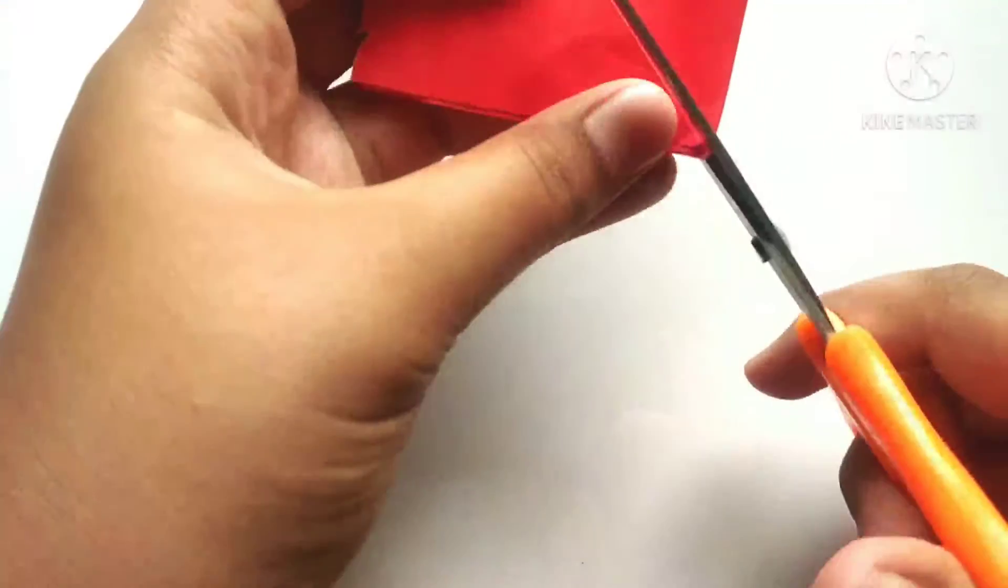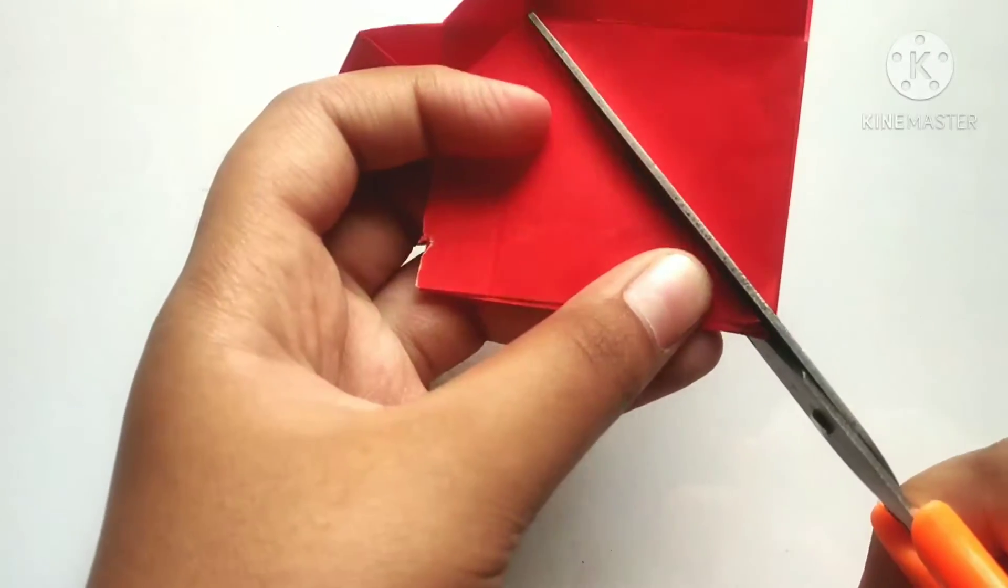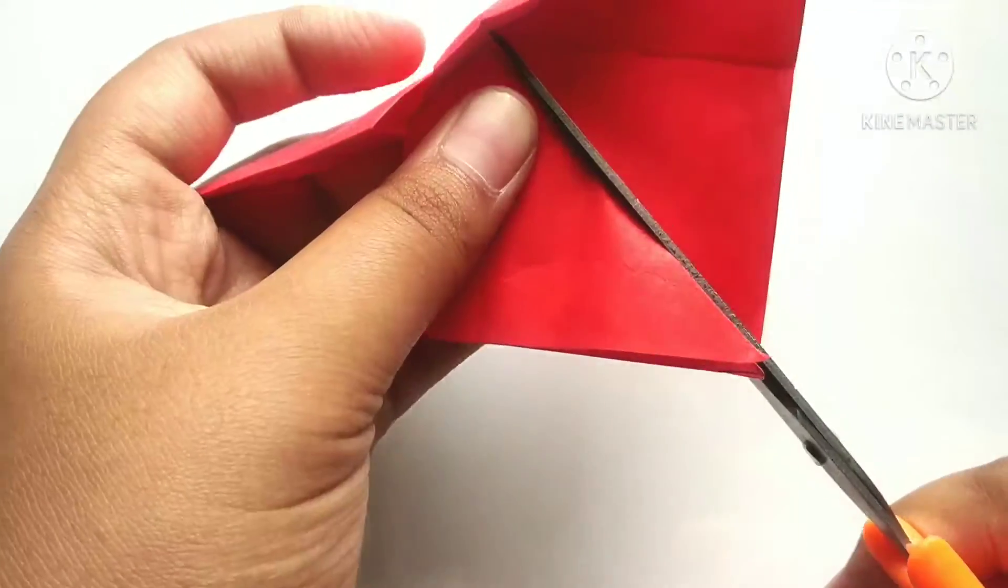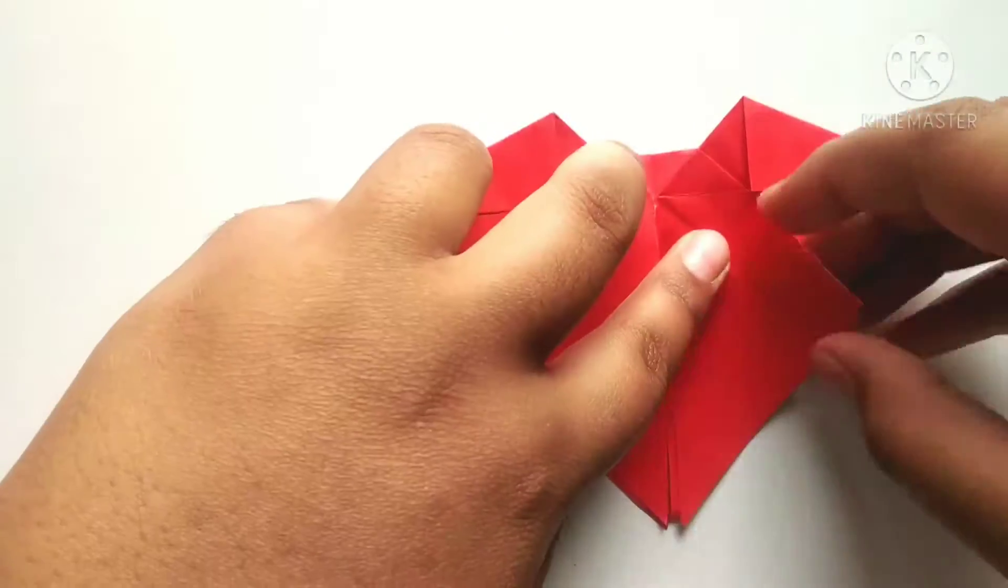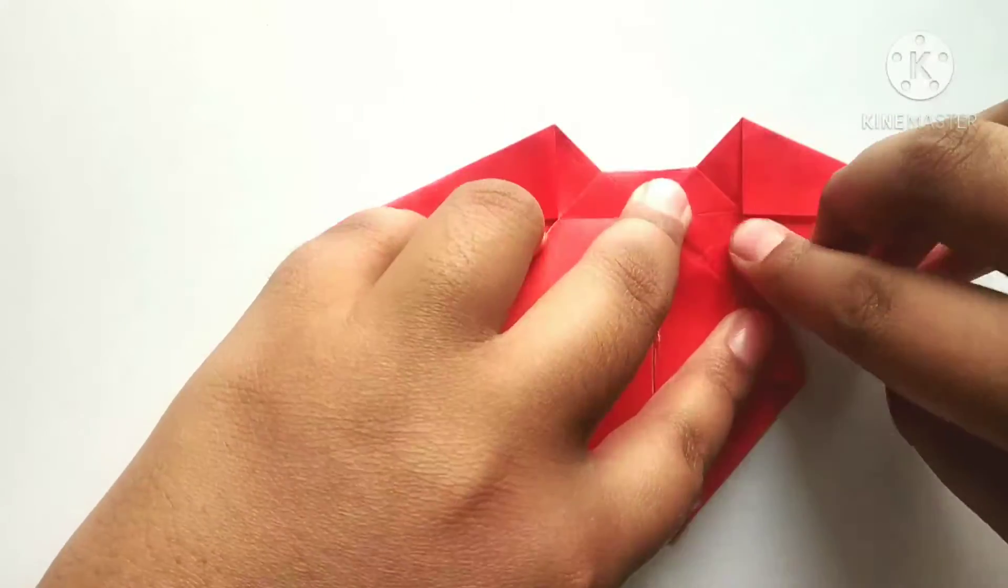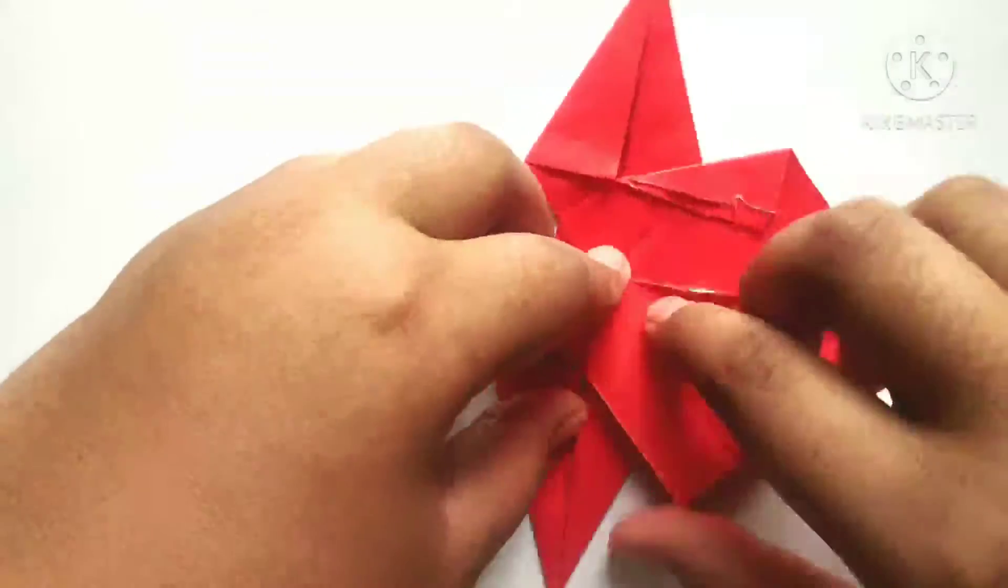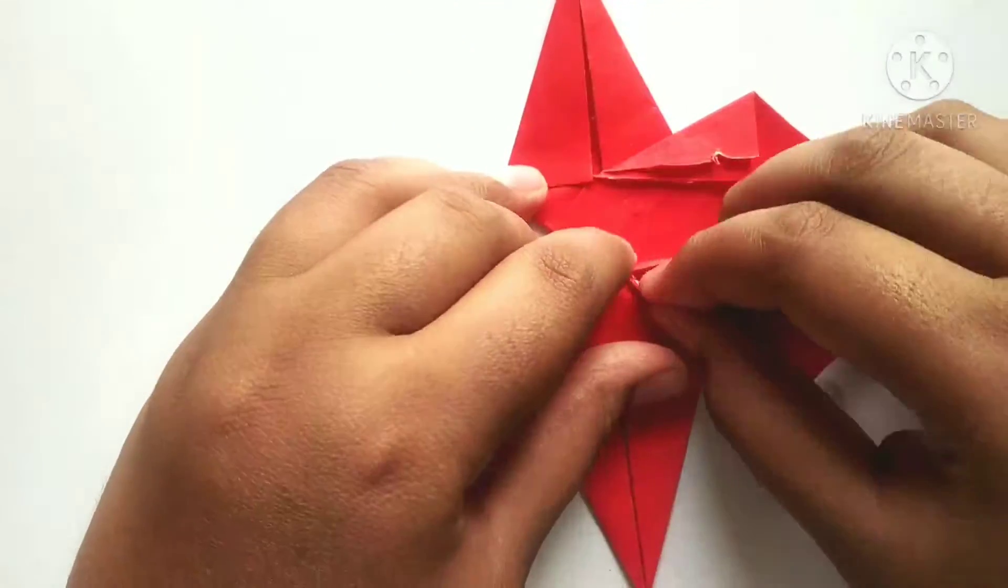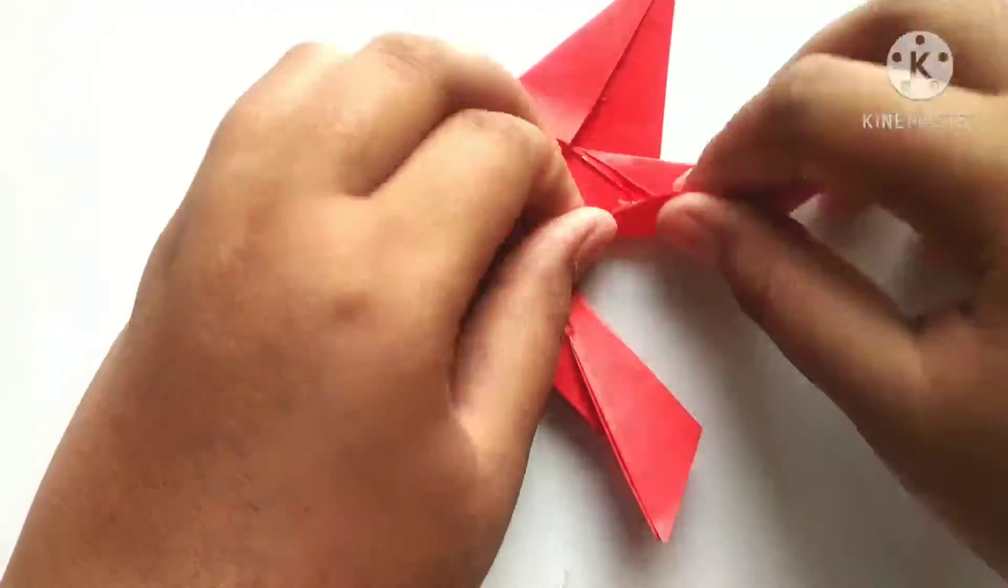After folding all four sets, we need to fold both sides downside and cut at the center of both the folds we have folded, and we need to fold upwards to the fold we have folded like this.